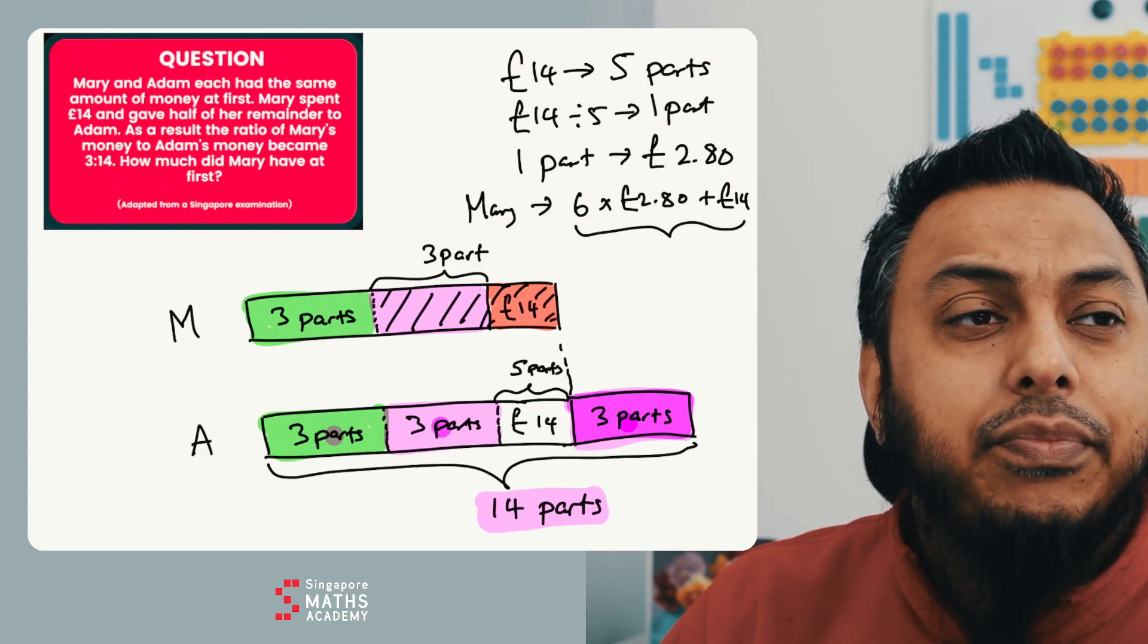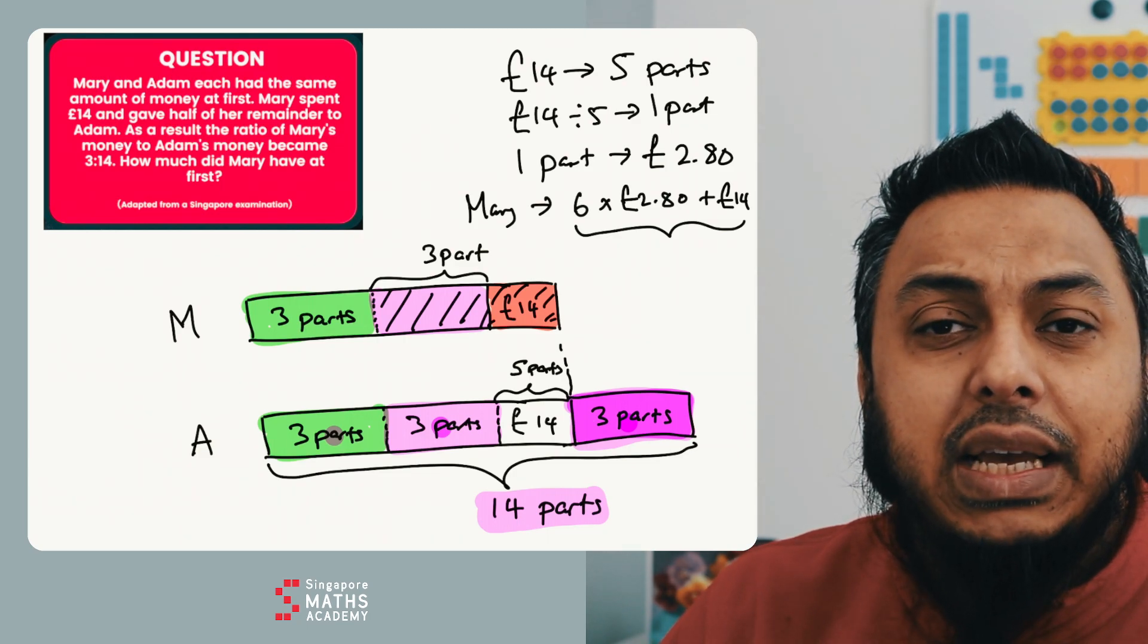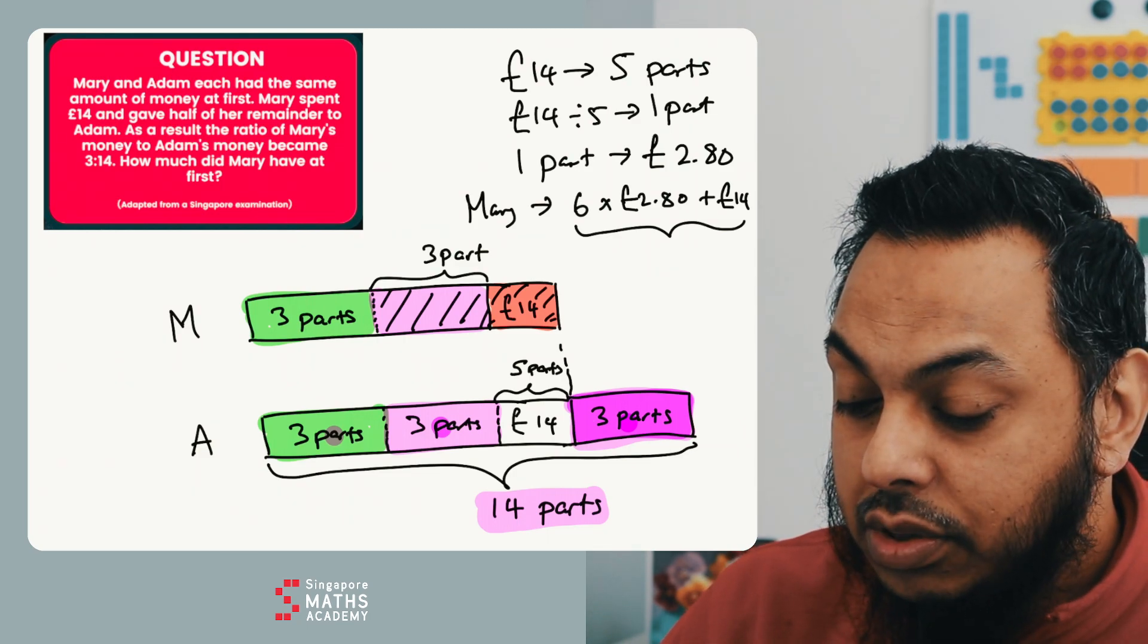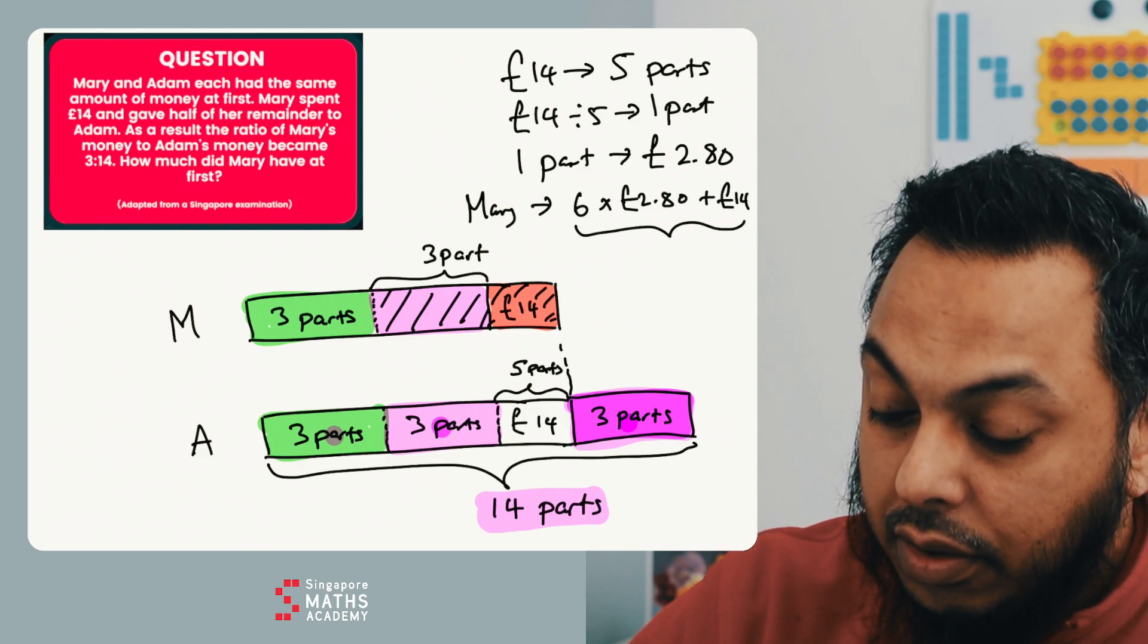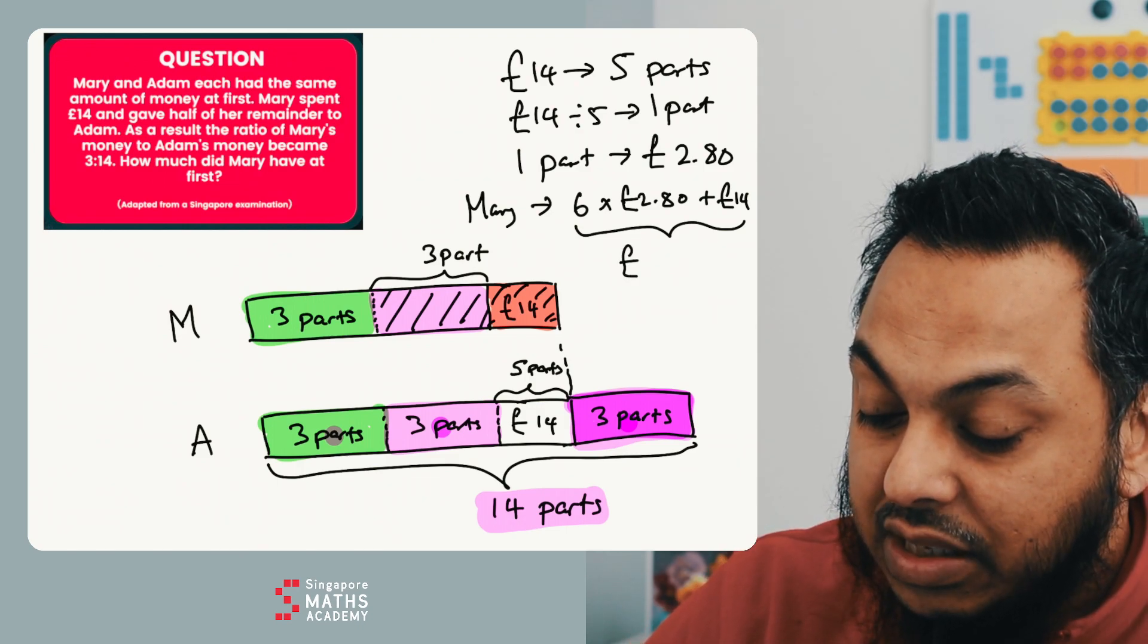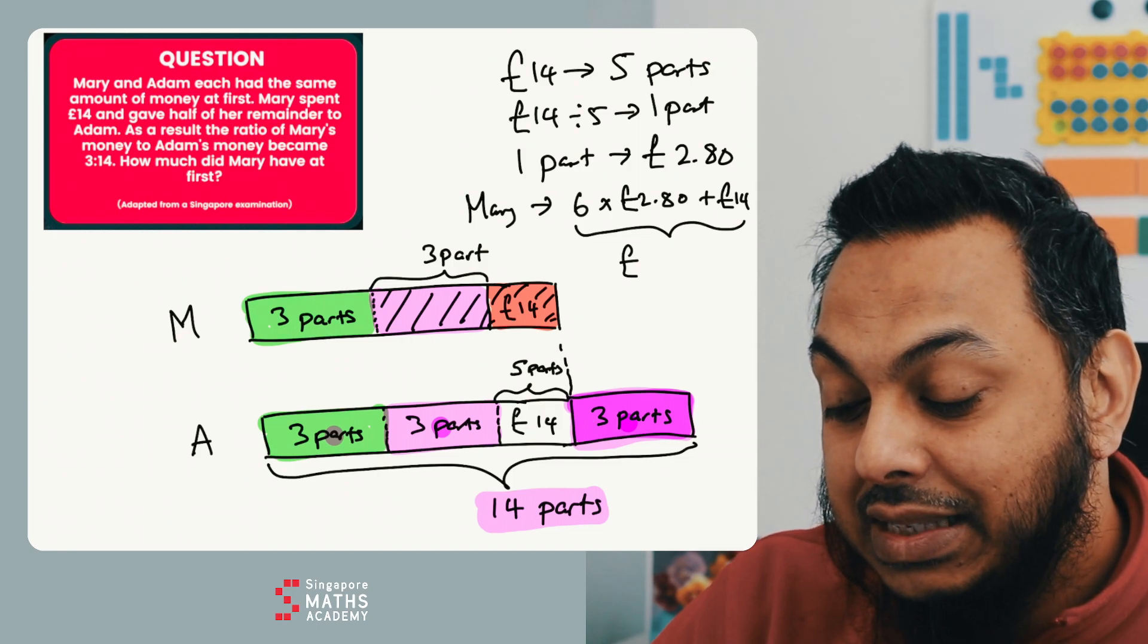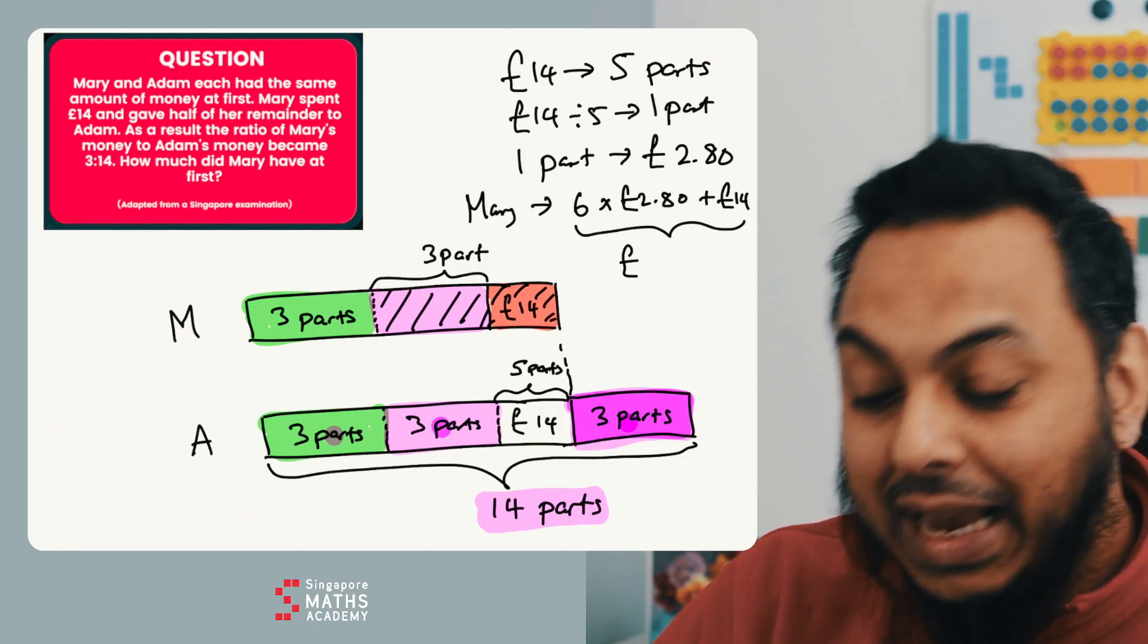So when I do that, 6 times £2.80 plus £14, I should get, well, six times £2 is £12, six times 80p is £4.80.